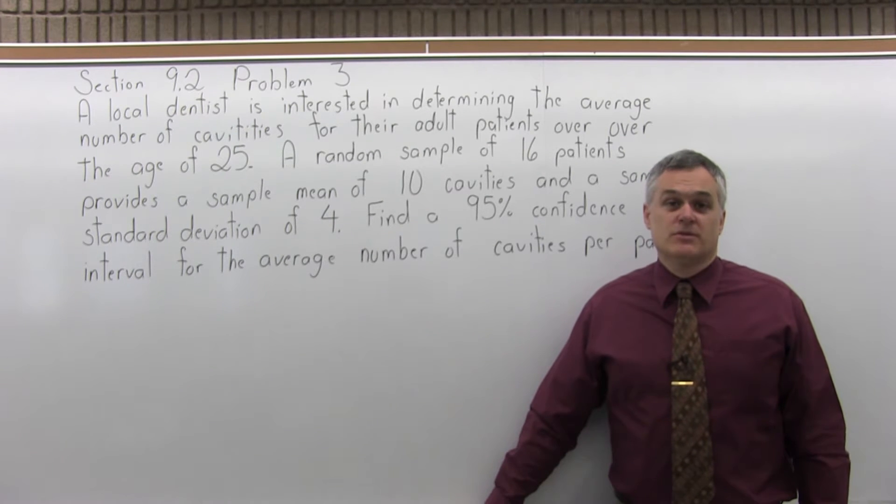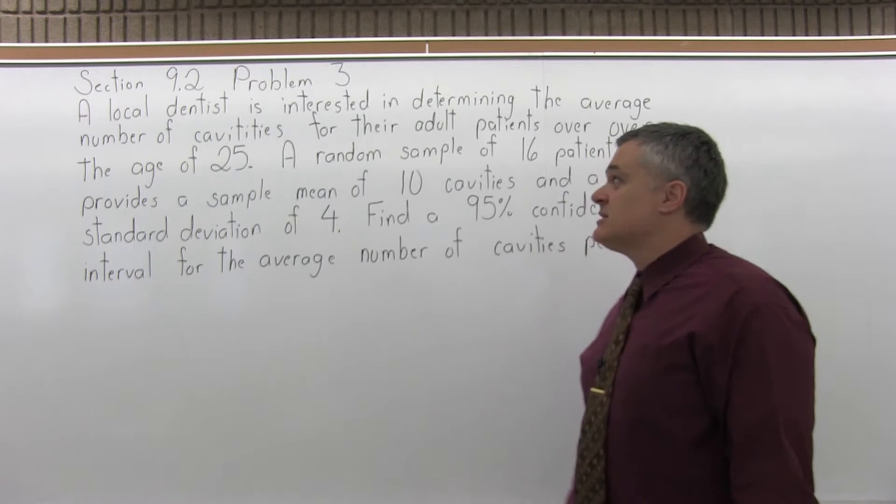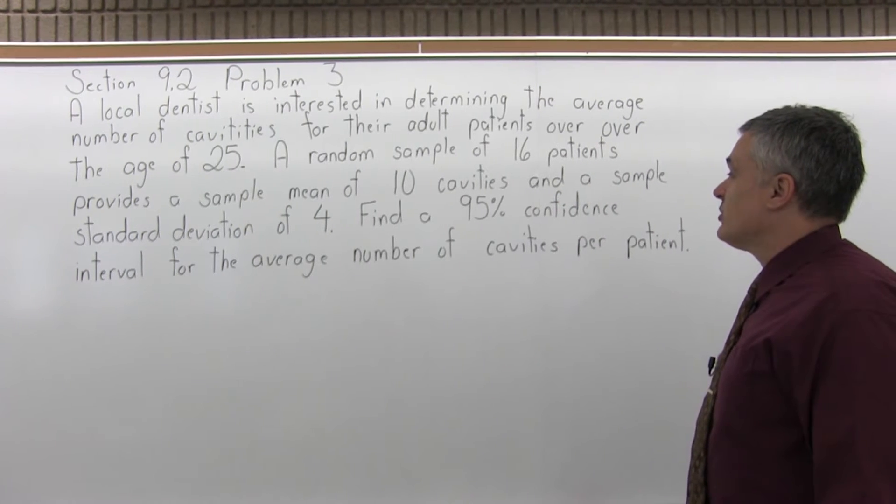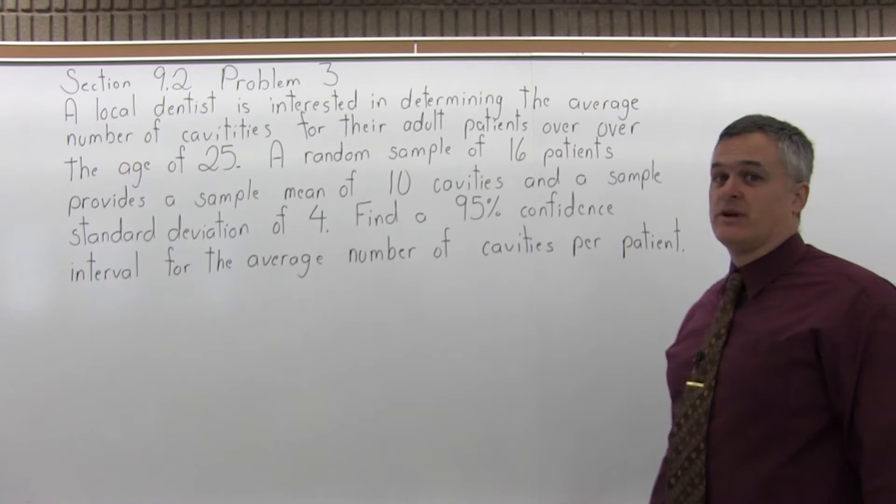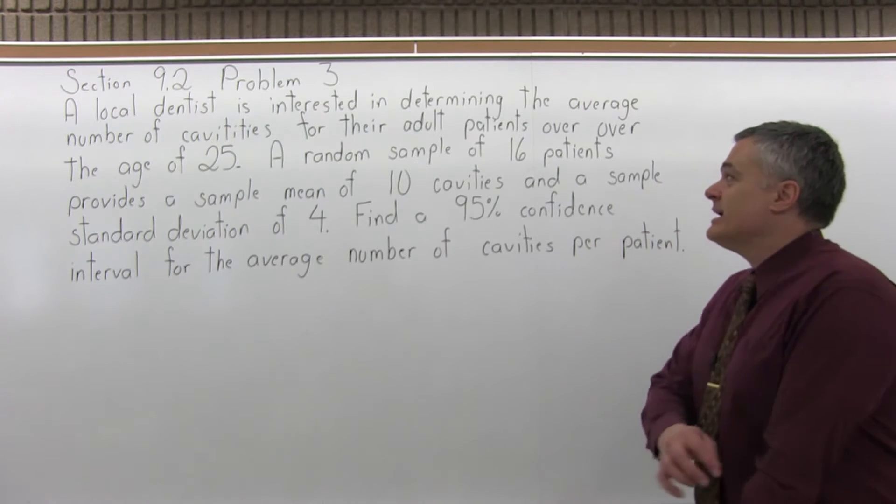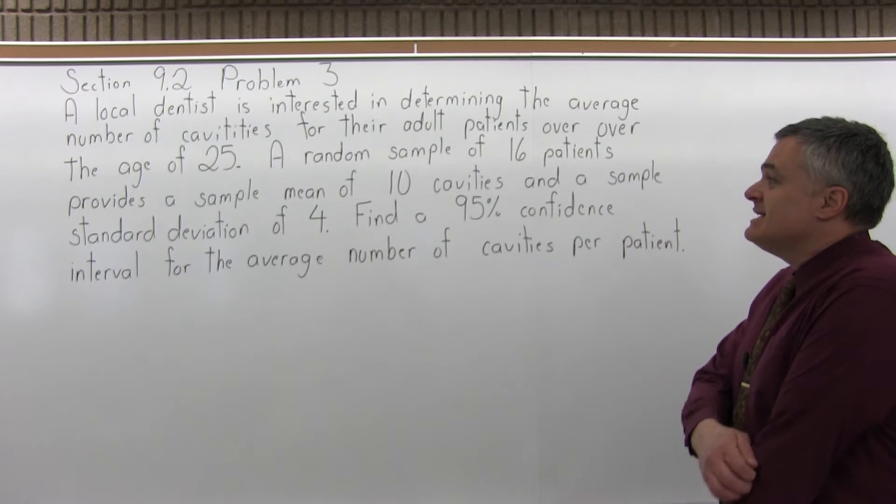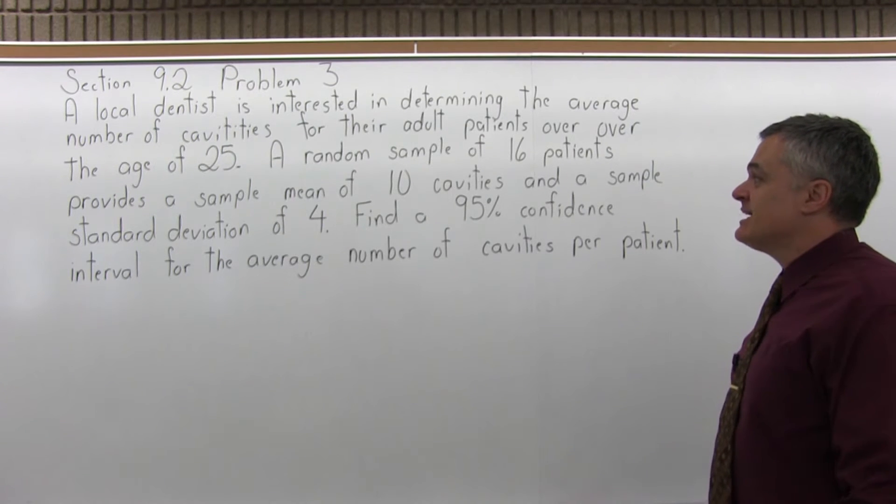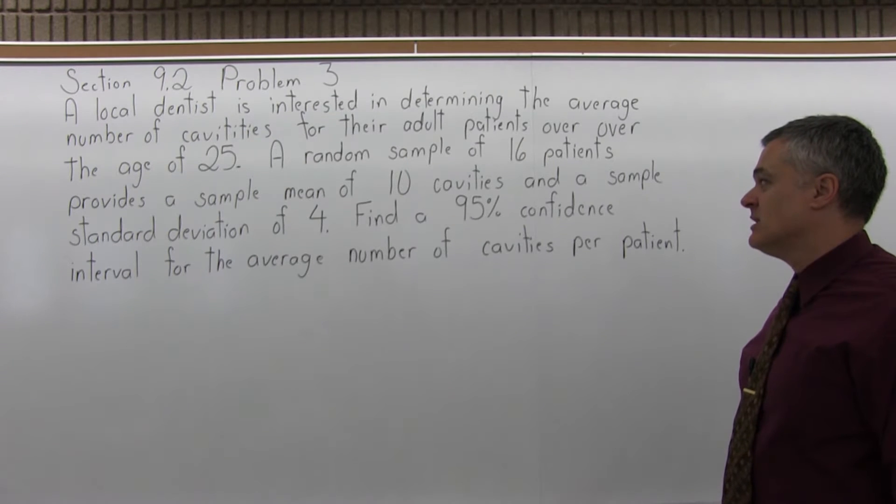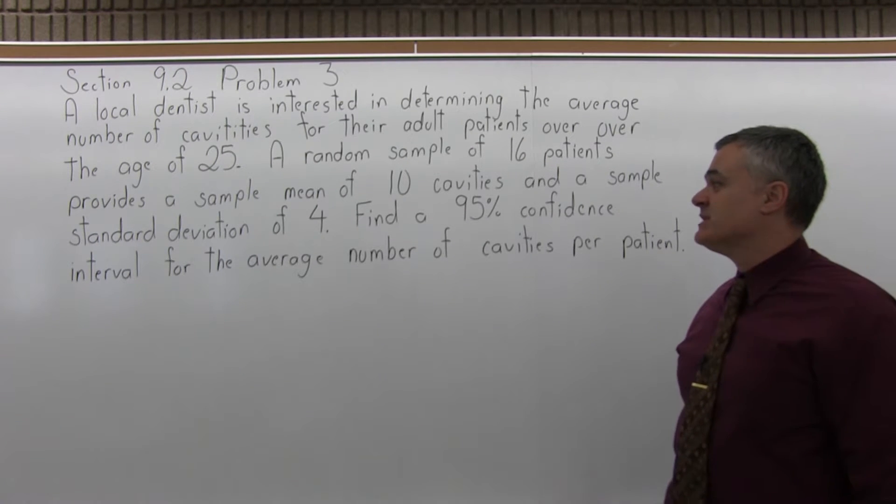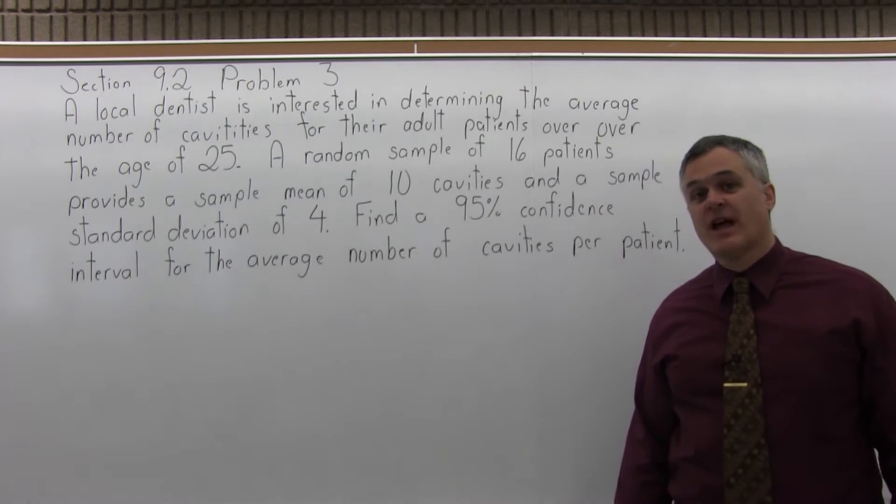This is Section 9.2, problem number 3. It says a local dentist is interested in determining the average number of cavities for their adult patients over the age of 25. A random sample of 16 patients provides a sample mean of 10 cavities and a sample standard deviation of 4. Find a 95% confidence interval for the average number of cavities per patient.